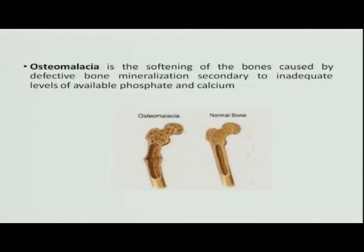Osteomalacia also occurs in children, involving softening of bones caused by defective bone mineralization. When calcium levels are inadequate, children cannot form their bones properly — there is no proper mineralization and there is bone deformity. You can see the normal bone compared to the deformed bone in the illustration.